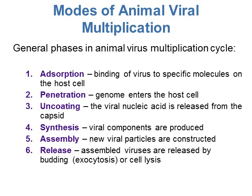For animal viruses, we're going to look at how they go through multiplication. There are six steps to this multiplication cycle. The first step is absorption — this is where the virus binds to the host cell using very specific molecules. Animal viruses usually have an envelope with spikes that help the virus find and attach to the host cell.